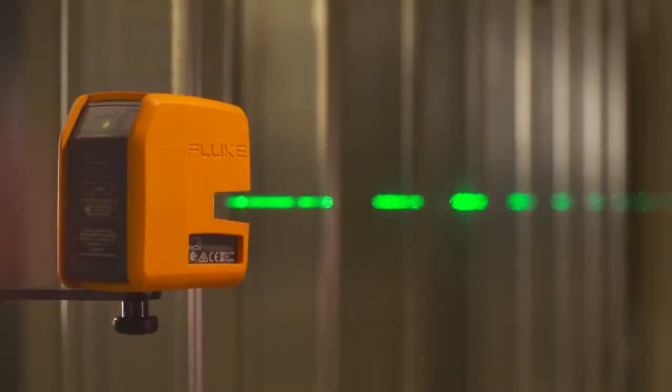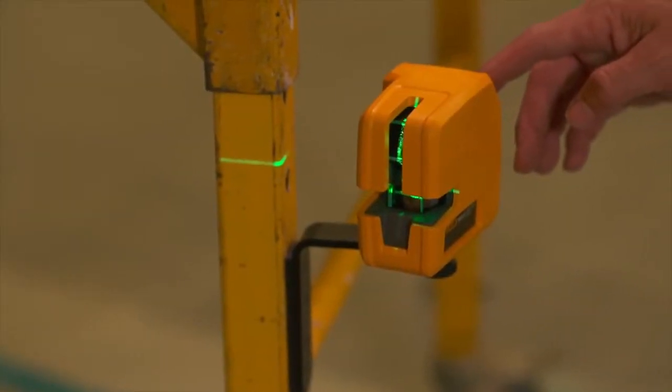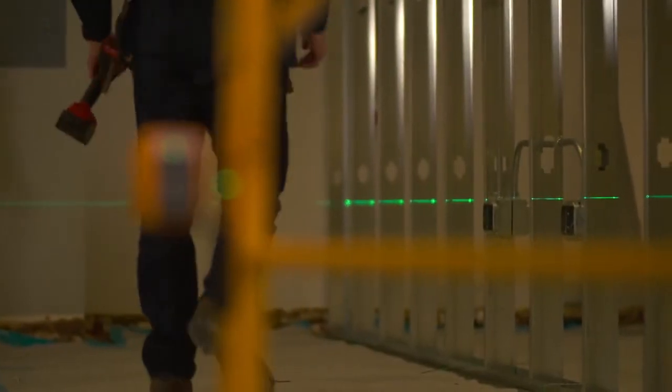Fluke laser levels are designed to make the job easier, save time over plumb bobs and old-school levels, and deliver impeccably aligned fixtures, outlets, conduit, ducts, and more.